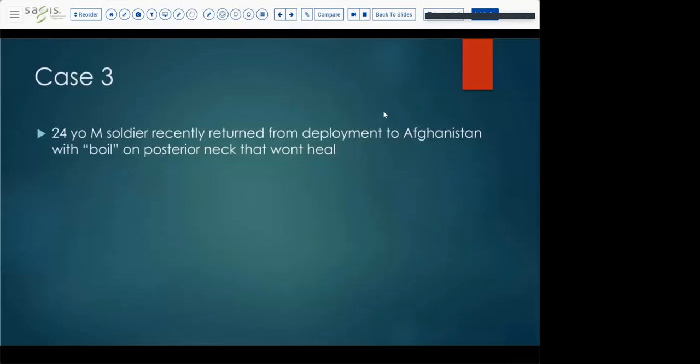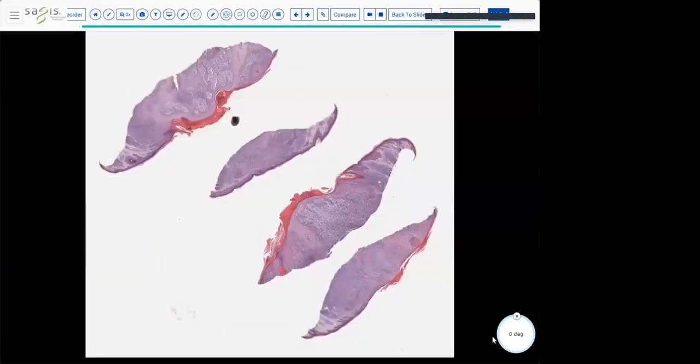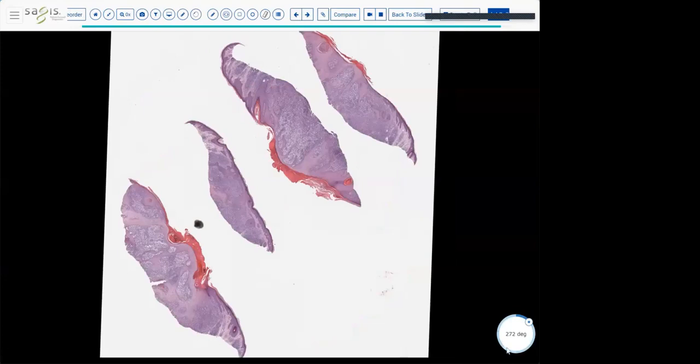The third case is a 24-year-old male soldier recently returned from deployment to Afghanistan with a boil on the posterior neck that won't heal. Here's the clinical. That's kind of this almost excoriated looking patch or plaque, a little papule there. You can definitely palpate that, about two, three centimeters, and it's not healing and it's not really growing or spreading or marginating out, but you'd want to think of tinea and other infectious things clinically. So we get a biopsy and this is what we see.